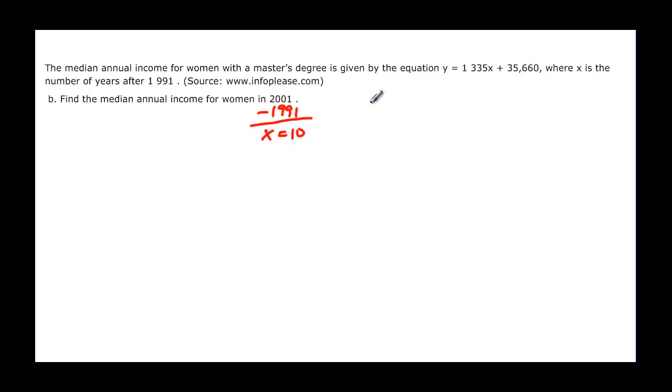So we can work with our problem and say that it's 1,335 times 10, which is our x, plus 35,660. And that's equal to our y.